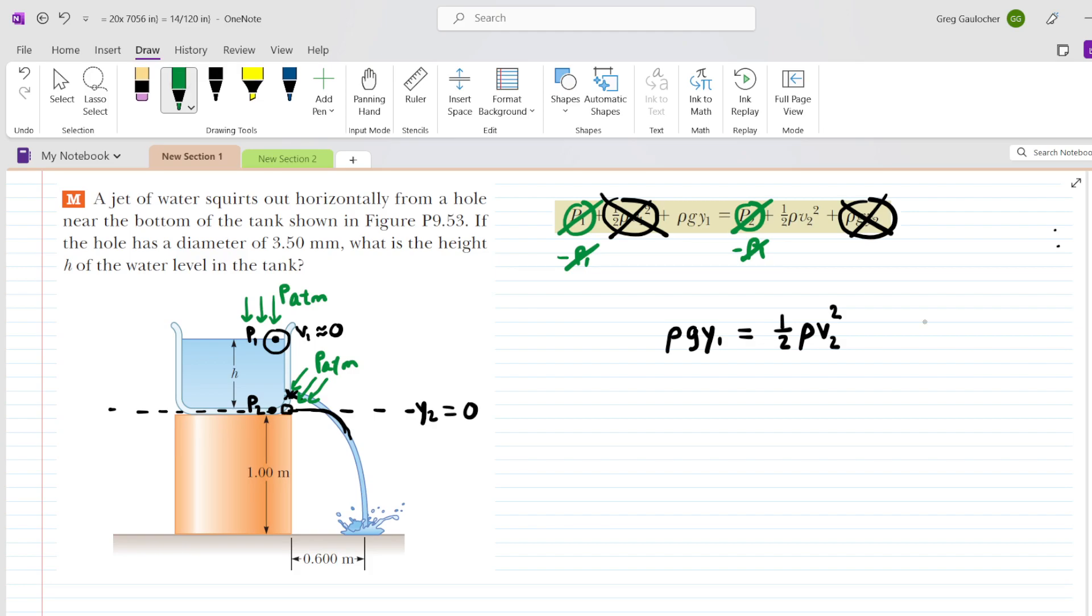And in fact, we have even better news because if we look at the simplified version of the equation, if we divide by the density of the fluid, then the density terms would actually cancel out. So we can simplify it yet again. Here is the simplified, most simplified version of the Bernoulli's equation. And it's important to take stock of what we're trying to actually solve for.